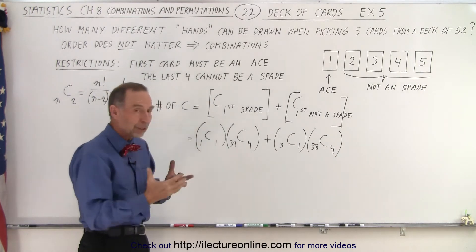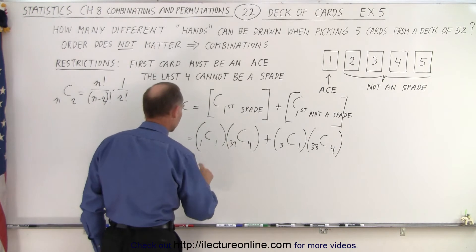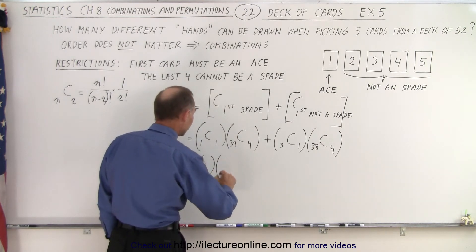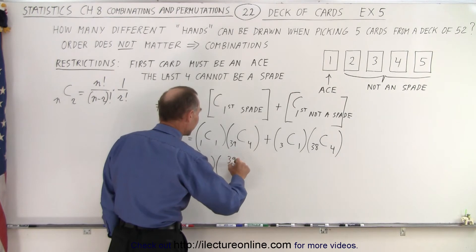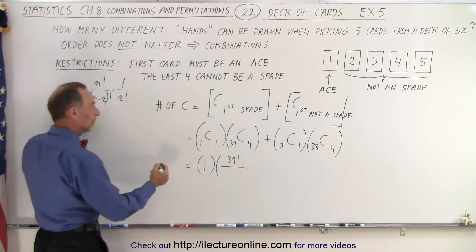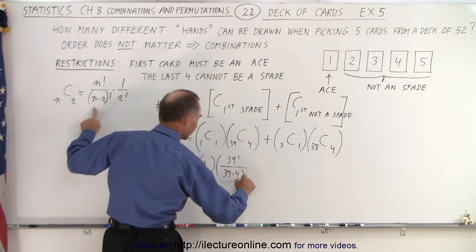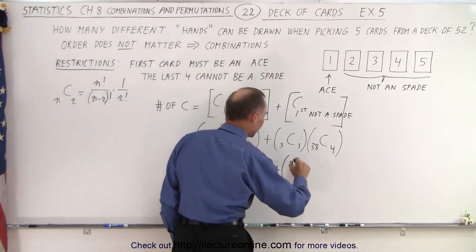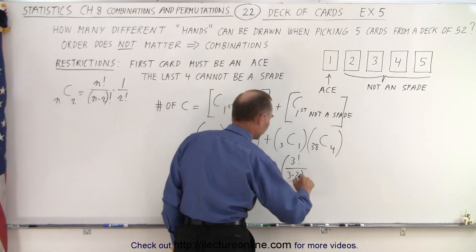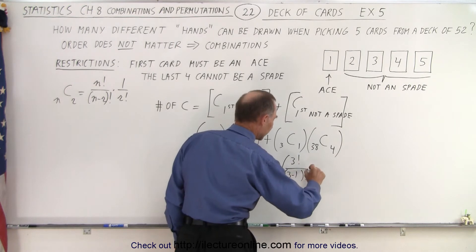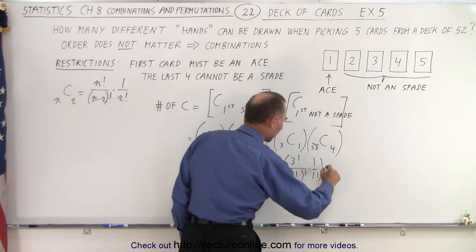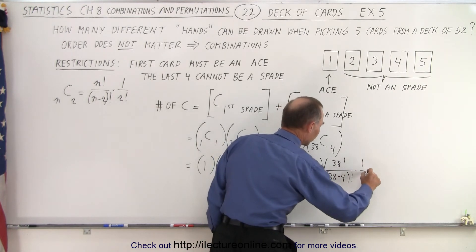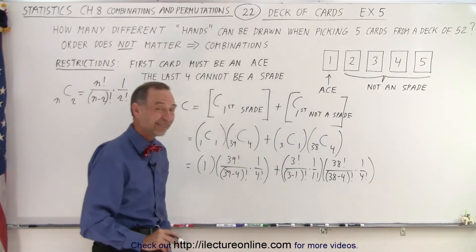All right, so this is equal to, well, 1 choose 1, that's simply equal to 1, because there's one card, and I pick it. And then, we have 39 cards, so this would be equal to 39 factorial, divided by, because we're using this general equation, 39 minus 4 factorial, times 1 over 4 factorial. And then, we add to that, 3 choose 1, so here we have 3 factorial, divided by 3 minus 1 factorial, times 1 over 1 factorial. And we multiply that times 38 factorial, divided by 38 minus 4 factorial, times 1 over 4 factorial.